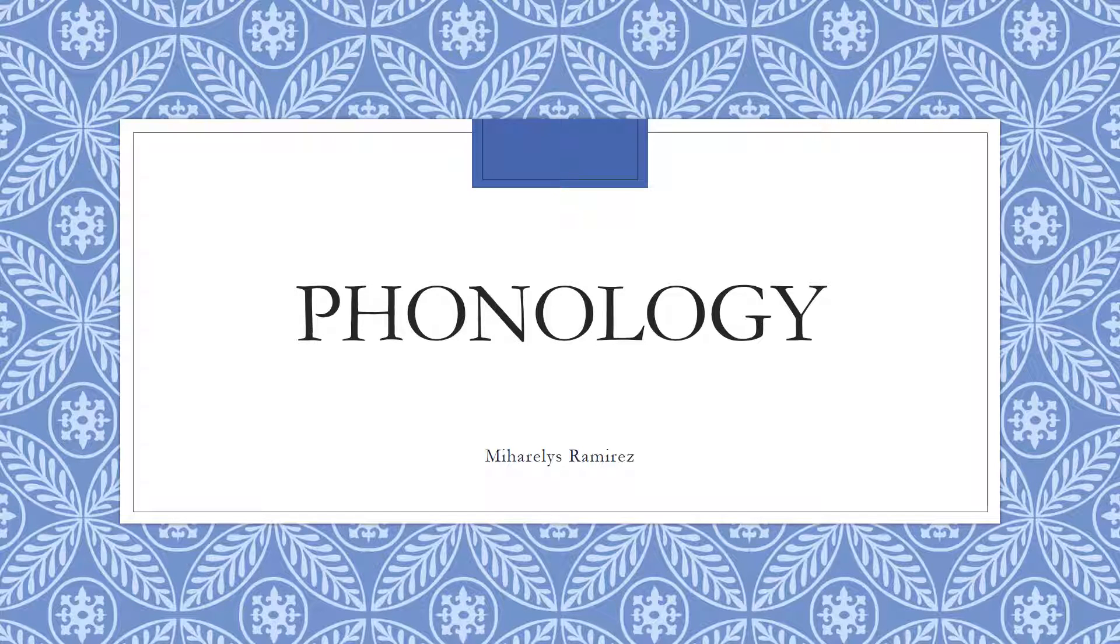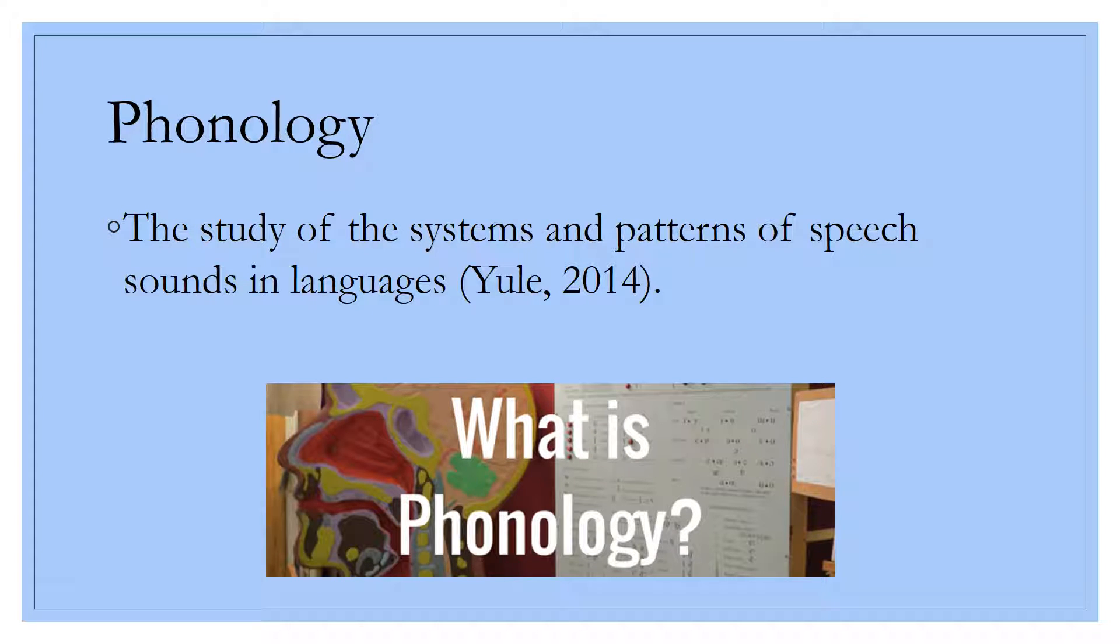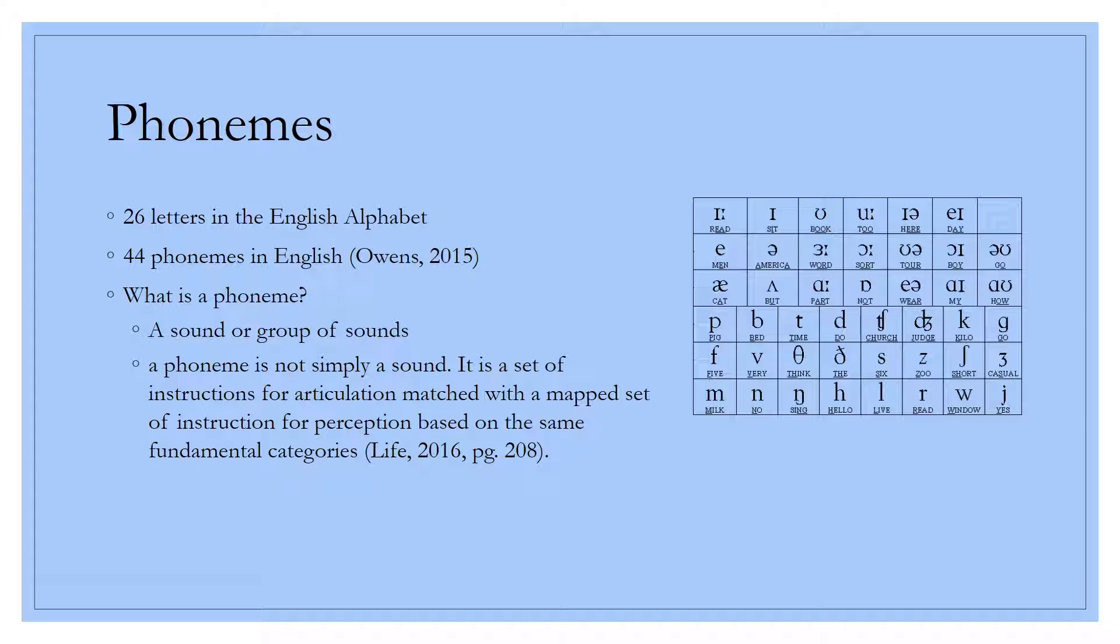Hi, I'm Marilise Ramirez, and I'll be talking about phonology. Phonology is the study of systems and patterns of speech sounds in languages. In other words, it is the study of ways in which speech sounds form systems. There are 26 letters in the English alphabet, but there are 44 phonemes in English. A phoneme is a sound or a group of sounds. They are the basic sounds of language, and they're the building blocks we use when we want to make words, and they are the smallest unit of sound. Each symbol represents one specific sound, just like the chart that's right there.